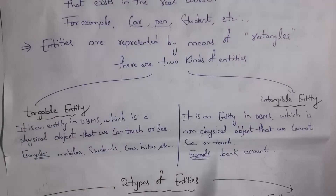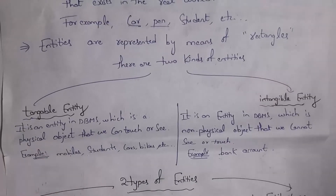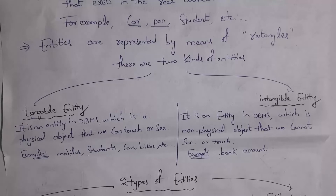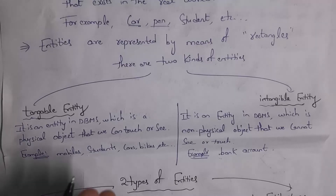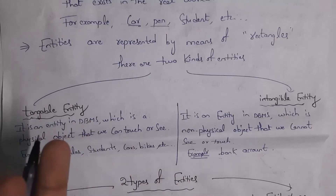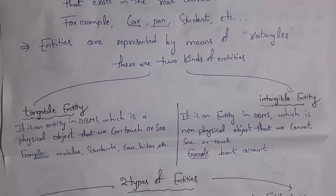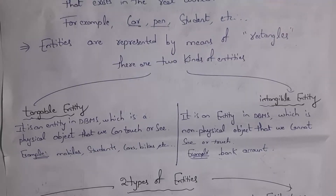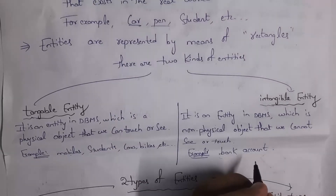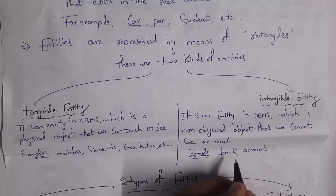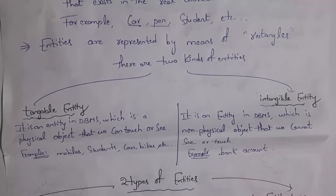There are two types of entities: tangible entity and intangible entity. A physical object which we can touch or see is known as tangible entity. For example, mobile phone, students, cars, bikes — we can touch and see all of these. Intangible entity means objects which we cannot touch or see. For example, a bank account — we cannot touch it because it is present in the computer. So objects which we cannot touch physically are known as intangible entities.